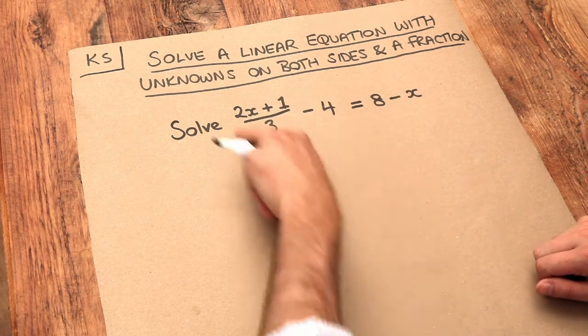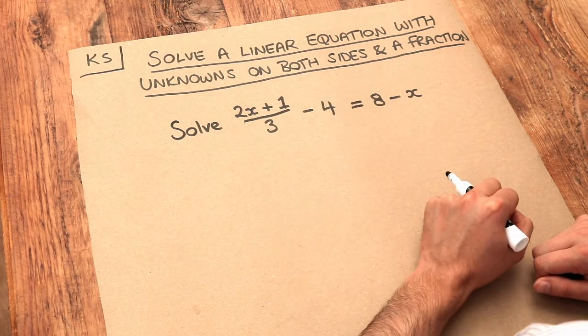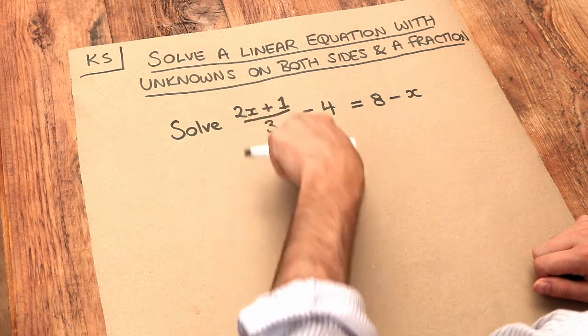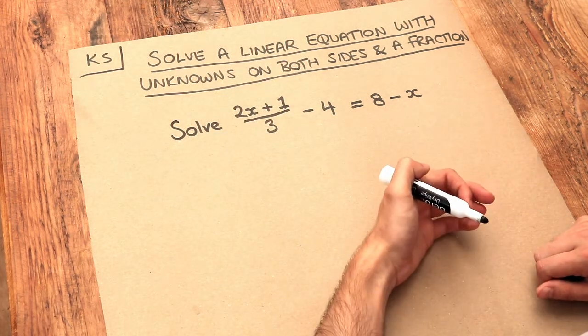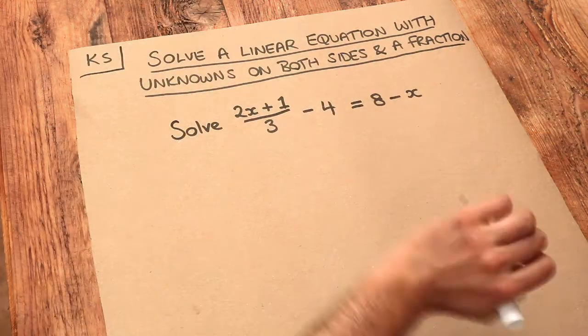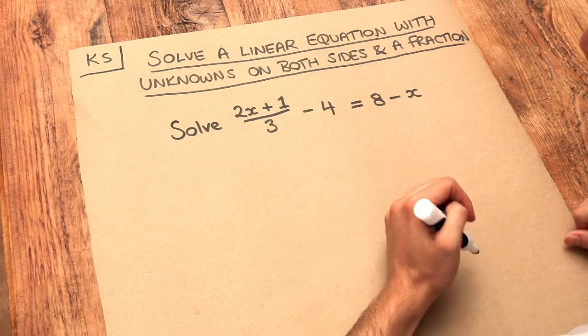So we've got this equation here we want to solve, and to solve means we want to find the value of x. The complicating factor here is we've got this fraction. My general principle with solving equations is that we want to get everything out into the open first, and that means to get rid of brackets, to get rid of fractions.